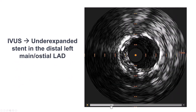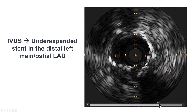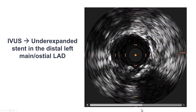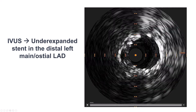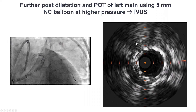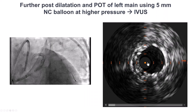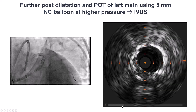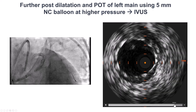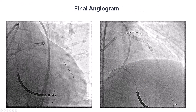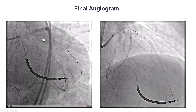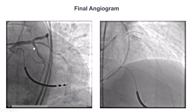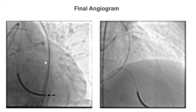IVUS showed that the left main stent was under-expanded in the distal segment. And that is why we ended up using intravascular lithotripsy in an attempt to get it better expanded. This is with a 5.0 mm balloon, and that significantly improved the stenosis of the distal left main. And this is the final angiogram. We have excellent result into the left main as well as the LAD. Even though we jailed the circumflex and the RAMUS, we have excellent flow in both of those branches.